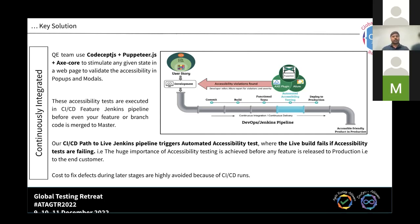We are using the CodeceptJS framework for end-to-end testing, along with Puppeteer.js, and injecting the axe plugin to evaluate accessibility violations across different pages, pop-ups, and modals. Whenever a new feature or requirement comes in and development is complete, the code is committed and the CI/CD Jenkins pipeline starts. The pipeline has different stages — it executes functional test cases, then automatically triggers accessibility testing across all pages including pop-ups and modals. If any violations are identified, the team is alerted. A detailed report is generated covering violation severity: critical, serious, moderate, minor, and incomplete.